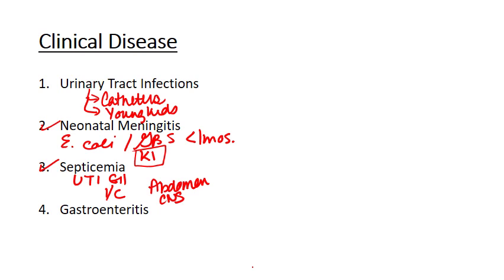The last disease we associate with E. coli is gastroenteritis — actually one of the more common ones. Gastroenteritis and UTI are the ones we see most often in terms of patient volume. All strains of E. coli can cause gastroenteritis, but they appear and manifest differently depending on the strain. We're going to go into more detail on the different strains and how that affects the presentation of gastroenteritis.